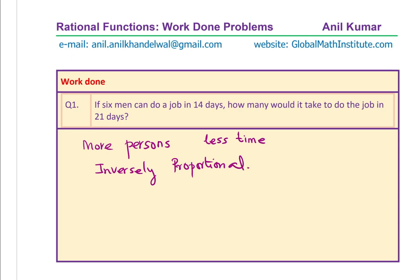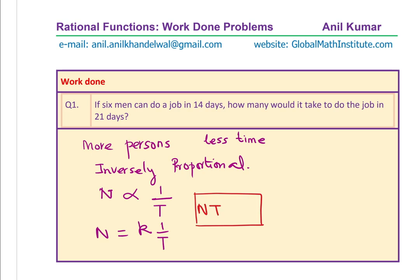Inversely proportional means: let n be the number of persons. Then time taken t is proportional to 1 over t, so n equals some constant times 1 over t. This gives us the very important relation that n times t is a constant. The number of persons multiplied by the time taken equals a constant — this is what happens with inversely proportional relations.